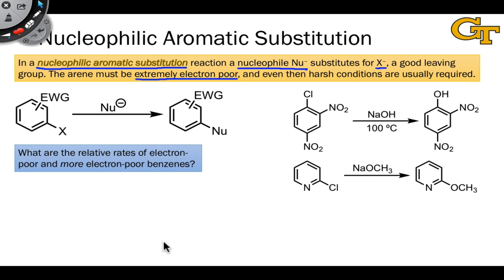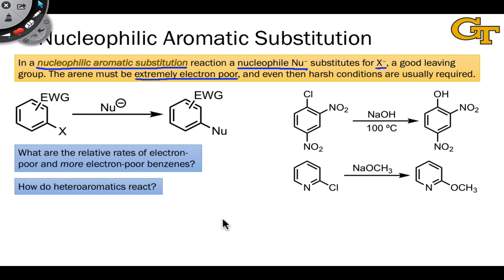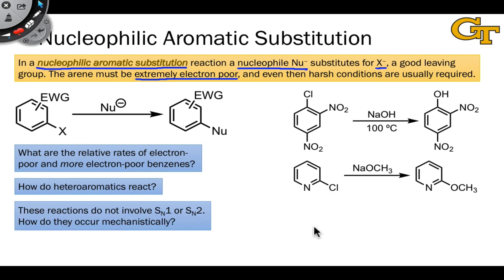Questions of interest for NAS include the relative rates of electron-poor versus even more electron-poor benzenes, and how heteroaromatics react — especially electron-poor heteroaromatics like pyridine, which are amenable to nucleophilic aromatic substitution. How do these reactions occur mechanistically? We've seen the paradigm, but there are further details, such as what happens to the aromaticity in the intermediate of this reaction. Addressing these mechanistic questions will help us answer the questions about relative rates and site selectivity as well.